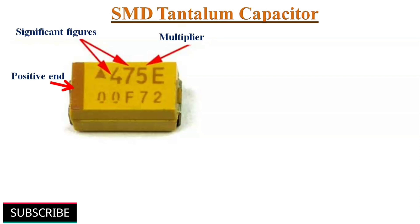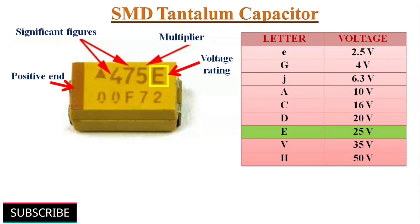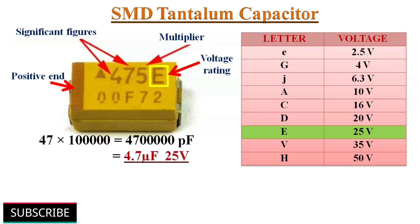In many cases, the three-figure format is normally used, where the first two digits indicate significant figures and the third digit indicates a multiplier. The letter indicates voltage rating, as shown in a table. For example, the capacitor shown has a capacitance value of 4.7µF with a voltage rating of 25V.